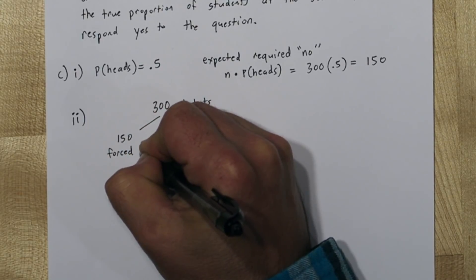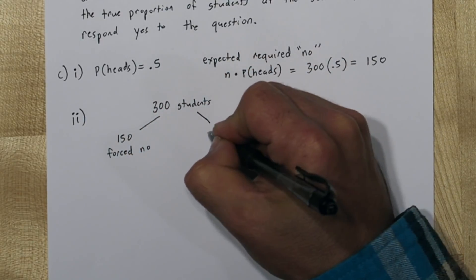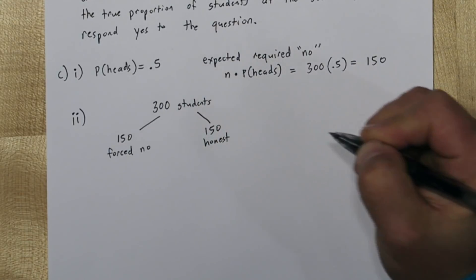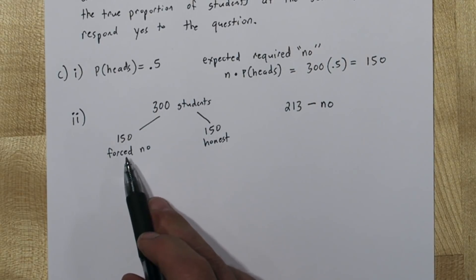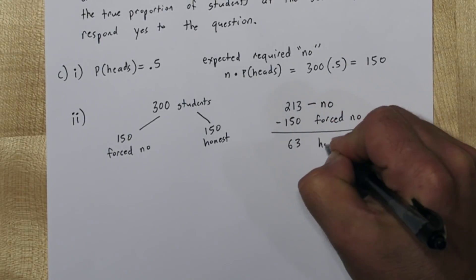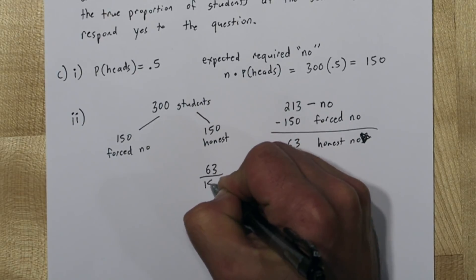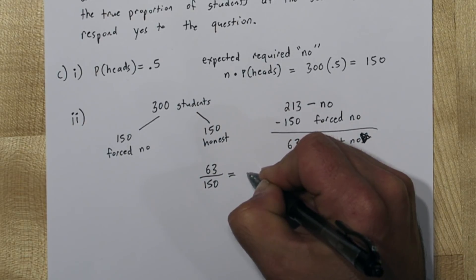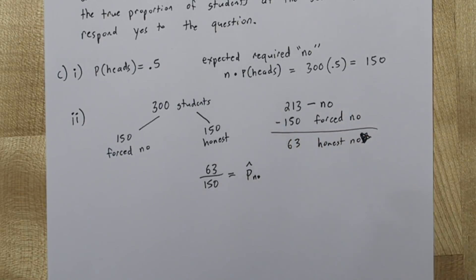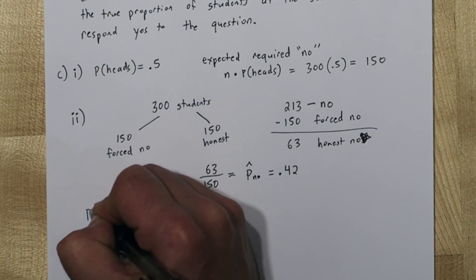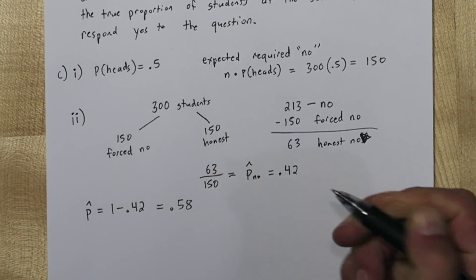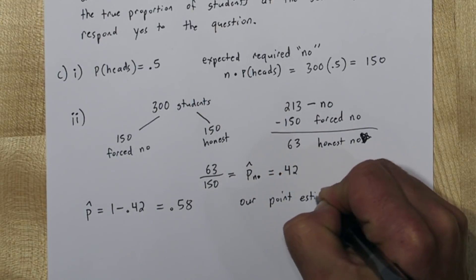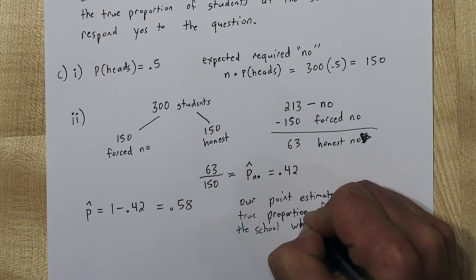Then the other 150 students are giving an honest answer. So we need to estimate our parameter based on these honest students. Since there was 213 total no's and we expect 150 of those to be forced no's, that leaves us with 63 honest no's. So since we have 150 in our honest group, we could figure out our point estimate for the no's, which would be 63 over 150, or 0.42. Now the question asks us to come up with a point estimate for the proportion of yes responses, which will just be the complement of this. So 1 minus 0.42 is 0.58. So our point estimate for the true proportion of students at the school who would answer yes is 0.58.